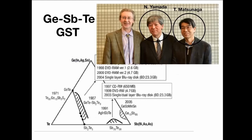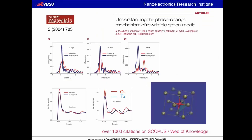After years of research, Panasonic under Yamada found the best material: germanium-antimony-telluride (GST) alloys. In early papers it was believed the local structure is simply disordered upon amorphization. But unlike amorphous silicon or amorphous arsenic sulfide — where local structure is similar to the crystalline form — this is not the case for phase change materials.